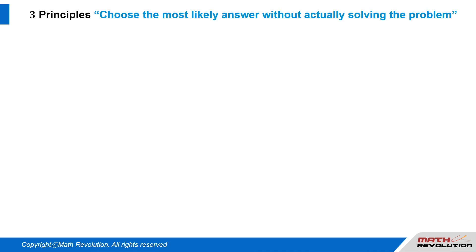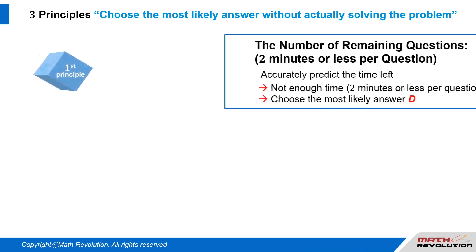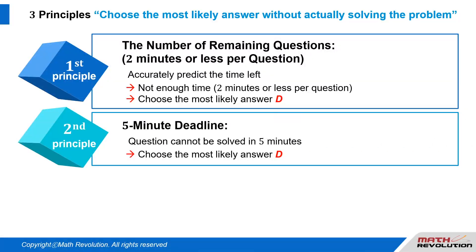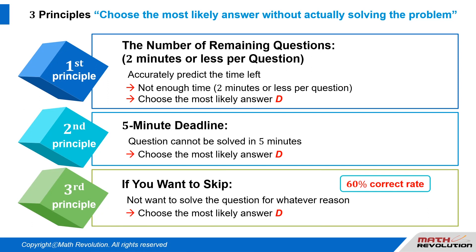After learning the variable approach, many students tell us they finished the exam with ten minutes remaining instead of running out of time. Therefore, if you find yourself in any of the following situations, it is best to choose answer D. First principle: if the number of remaining questions times two minutes leaves you with limited time, choose D. Second principle: if you are unable to answer within the five-minute deadline, choose D. Third principle: if you simply want to skip the question, choose D. In the original condition with one variable needing one equation, it is about 60% likely that D is the answer. On the actual exam, be sure to pick D.